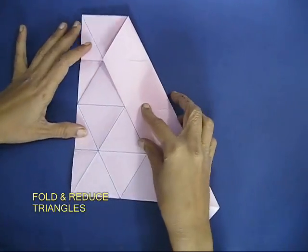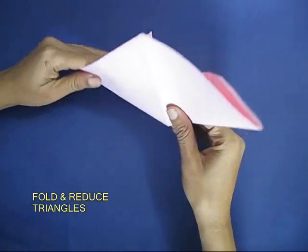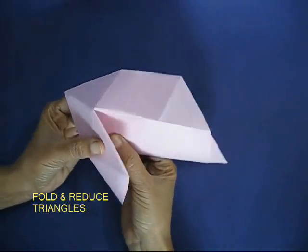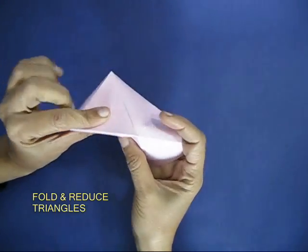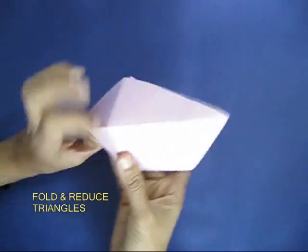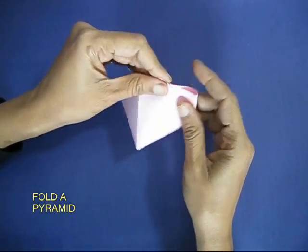There are one too many equilateral triangles and now you need to eliminate them by folding. If you keep folding and reducing the number of triangles you can tuck one inside the other and finally you can fold a pyramid.